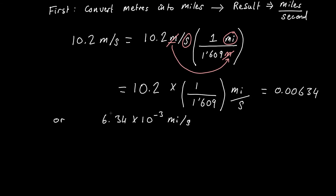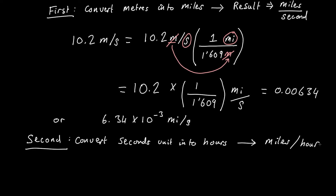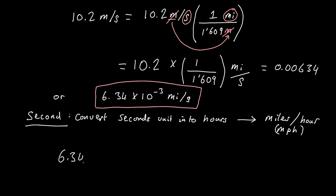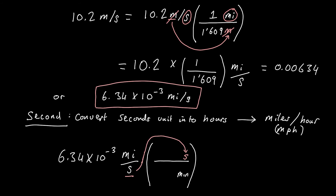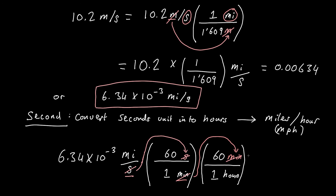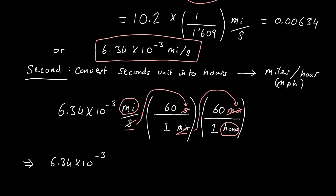Since we want miles per hour, we need to convert seconds into hours. We can split this into two stages: first converting seconds into minutes, then minutes into hours. The first conversion factor has seconds in the numerator and minutes in the denominator. The second conversion factor has minutes in the numerator, to cancel out the minute unit from the previous conversion factor. This leaves us with units of miles per hour. After multiplying all our values, we get an answer of 22.82 miles per hour.